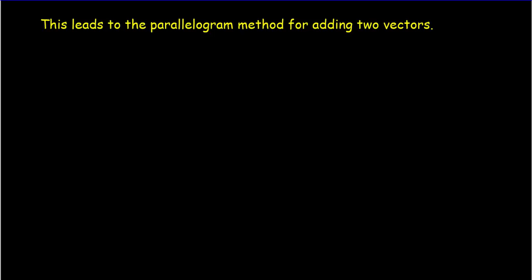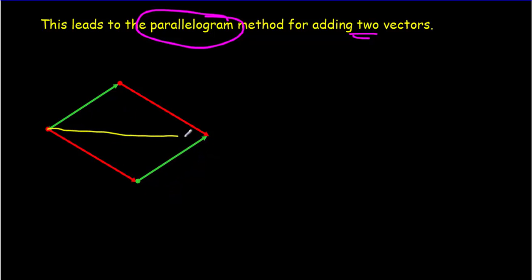This idea that vectors can be added in any order and they'll still get the same resultant leads to what's called the parallelogram method for adding two vectors. So, let's say we've got two vectors. Let's say we've got this green vector, and we've got a red vector, and we want to add them up. Now, we could do green first, then red, or we could do red, then green. Of course, in either case, you have to get the same resultant. And that means that we're going to get this parallelogram right here.